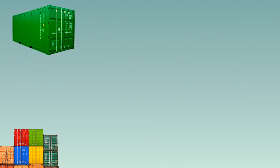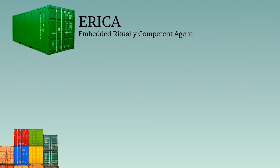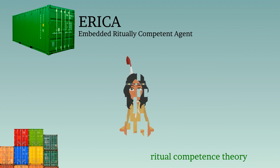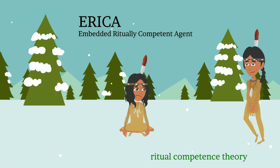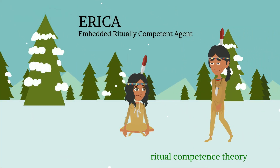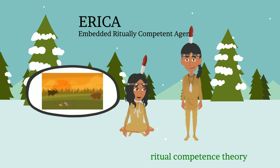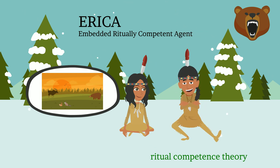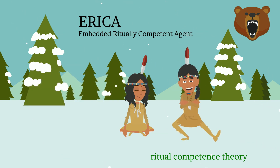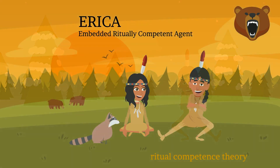The next step after MIRV is a new model we call ERIKA, which stands for the Embedded Ritually Competent Agent. ERIKA simulates what's called Ritual Competence Theory — a theory that says for religious ritual to work, people need a leader like a shaman or a priest, and there needs to be some religious belief or engagement with a supernatural agent. ERIKA simulates this theory, just as NAHUM simulates terror management theory.